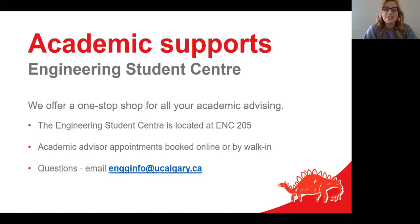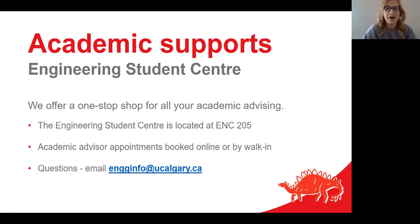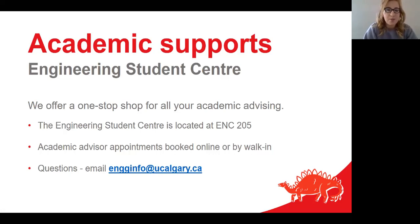Navigating your engineering degree and course requirements has been made easy with academic supports through the Engineering Student Centre — your one-stop shop for academic advising. The Engineering Student Centre is located in Engineering Block C, Room 205, otherwise known as ENC 205. There are many ways to connect: you can book an appointment online with an academic advisor, simply walk in when school is back open, or email advisors at any time at enginfo@ucalgary.ca.